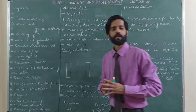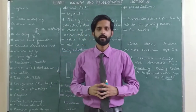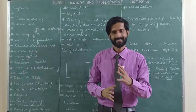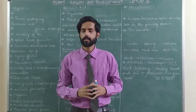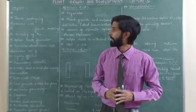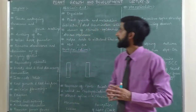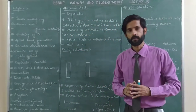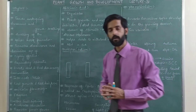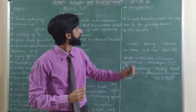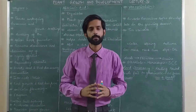Hello guys, welcome back to the channel YoYoBio. Chapter: Plant Growth and Development, Lecture 5. This is the last lecture of this chapter, where we will target 5 topics in detail. Our first topic is Ethylene, next is Abscisic Acid, third is Photoperiodism, fourth is Vernalization, and fifth is Seed Dormancy.